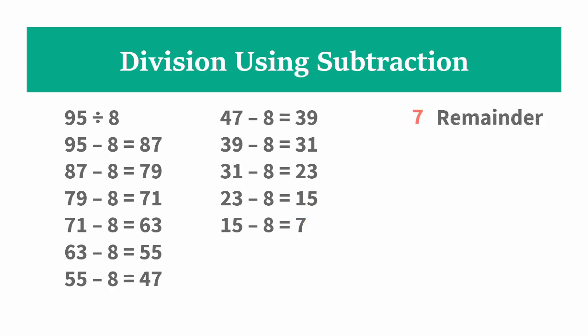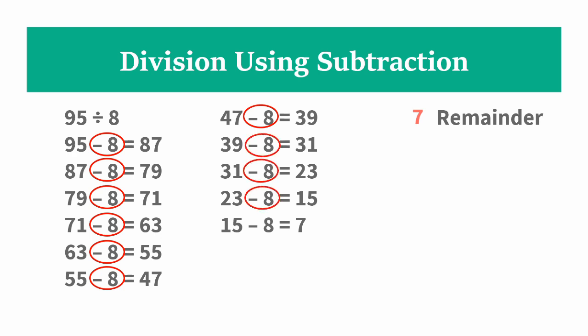How many times did we subtract 8? We count: 1, 2, 3, 4, 5, 6, 7, 8, 9, 10, 11. So our quotient is 11.